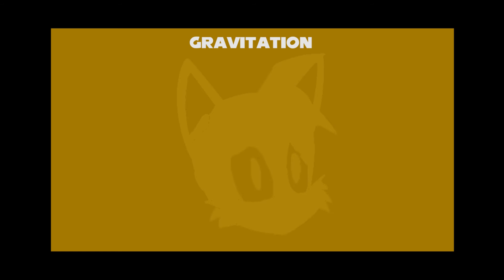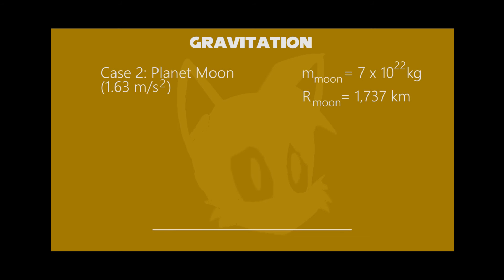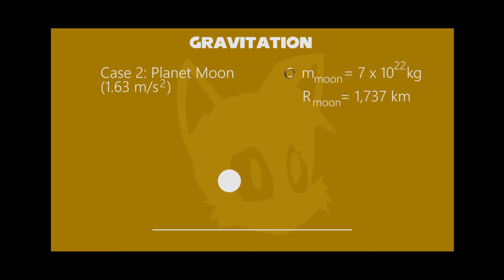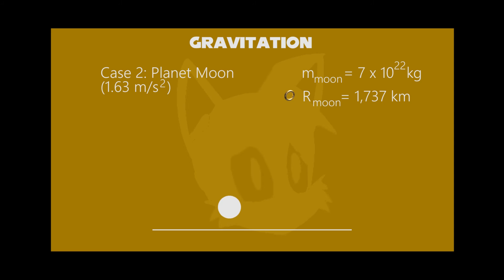Take the second case: the Moon. Its gravity becomes 1 sixth times the gravity of Earth — the value becomes 1.63. This means that the speed is 6 times slower than Earth. The mass of the Moon is 7 times 10 to the 22nd kilograms, and its radius is 1,737 kilometers. You should have noticed that it takes a lot more time than planet Earth.